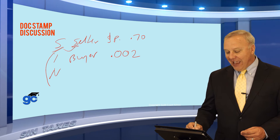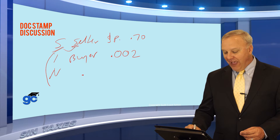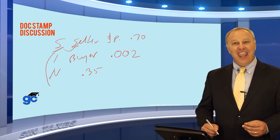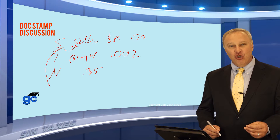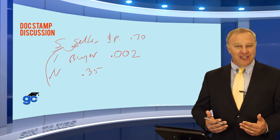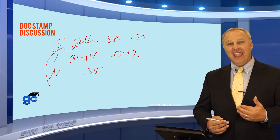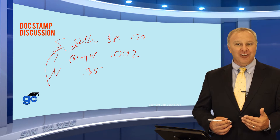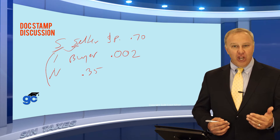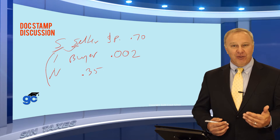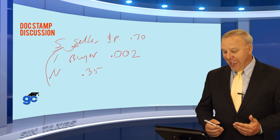The note tax rate is $0.35 or 35 cents per $100 or fraction thereof, and that is paid on new or assumed notes. If you have a property purchased subject to a mortgage, there would be no new note created, therefore there would be no note taxes on that.